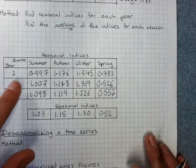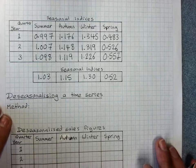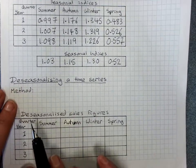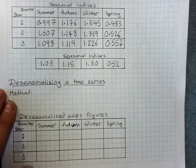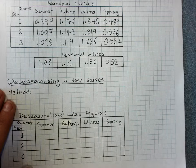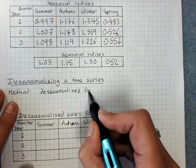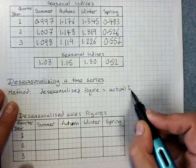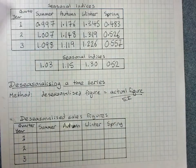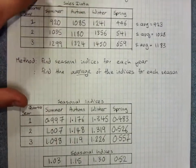That is how you find seasonal indices over several years. Now we need to use these seasonal indices to de-seasonalize a time series. This data is the actual sales data, and we want to use the seasonal indices to remove the seasonal variation. The de-seasonalized figure is simply the actual figure divided by the seasonal index.